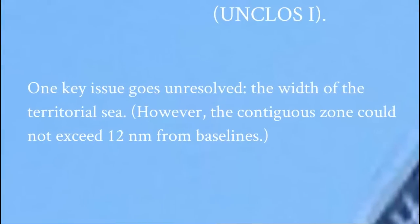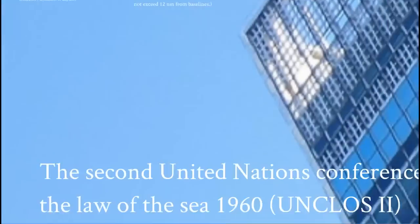But one key issue goes unresolved: the width of the territorial sea. There is agreement, however, that the contiguous zone, which is adjacent to the territorial sea, cannot exceed 12 nautical miles. So there's at least some sense that there's an outer limit to coastal state control at about 12 nautical miles, but no rule is settled on the breadth of the territorial sea.